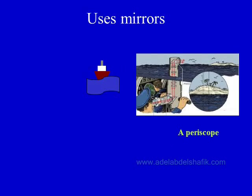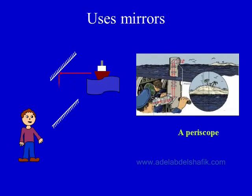An example of flat mirrors is the periscope — the apparatus used in submarines to see what is on the surface. Rays coming from an object on the surface are reflected from one mirror to another mirror and then to the observer.